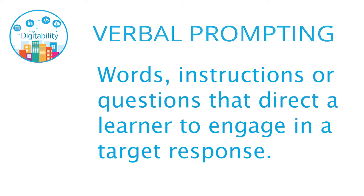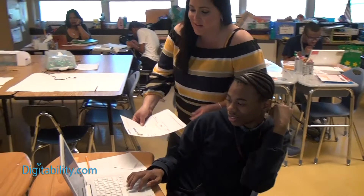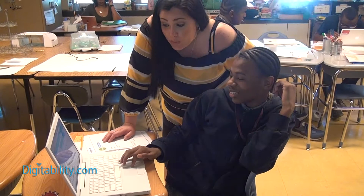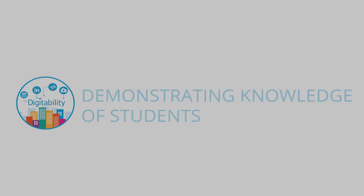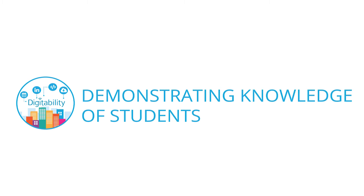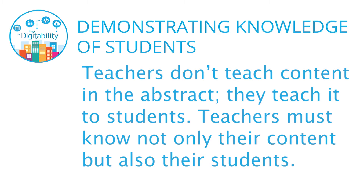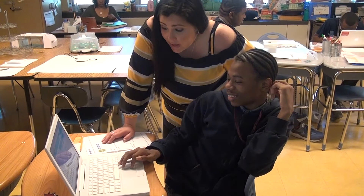Verbal prompting: with a student having difficulty, Dawn uses verbal prompting — stressing certain words and clarifying the question — so he can successfully complete the activity. She asks: 'Which one has www dot and which one has dot com?' The student selects one. Dawn clarifies: 'Which one has it at the beginning and the end, but also has something in the middle telling where we're going?' The student catches on — Dawn jokes with him because she knows he tends to think literally, helping him arrive at the correct answer.